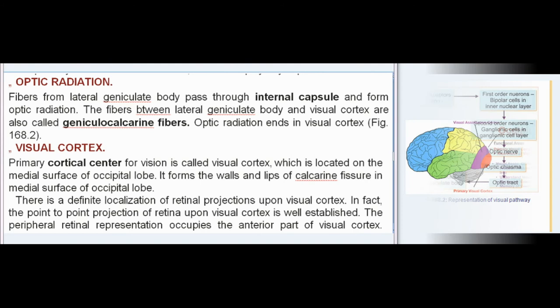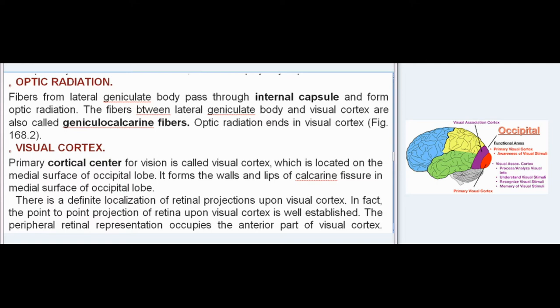Optic radiation: Fibers from the lateral geniculate body pass through the internal capsule and form the optic radiation. The fibers between the lateral geniculate body and visual cortex are also called geniculocalcarine fibers. The optic radiation ends in the visual cortex.